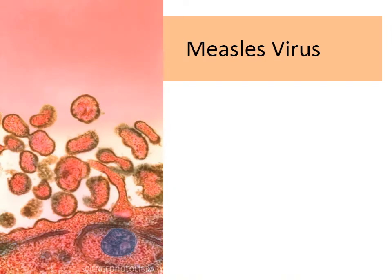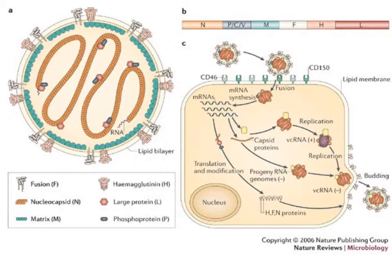In the electron micrograph you can see measles virus budding off a cell. Measles virus is important because it causes rampant skin infections — rashes and eruptions all over the body — and mucous membranes are also involved. Rashes on oral mucosa, which is a very sensitive area, create very painful conditions for children.